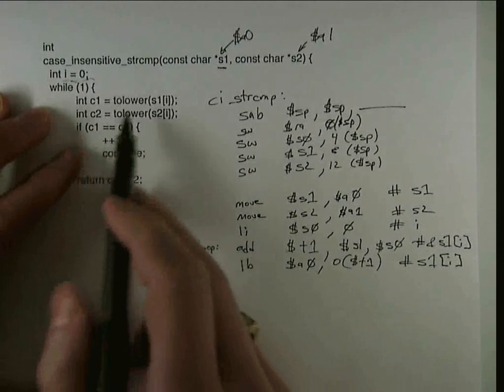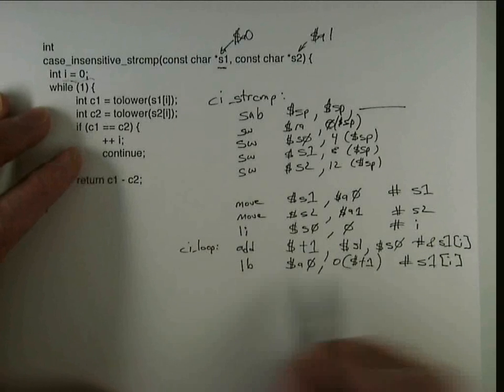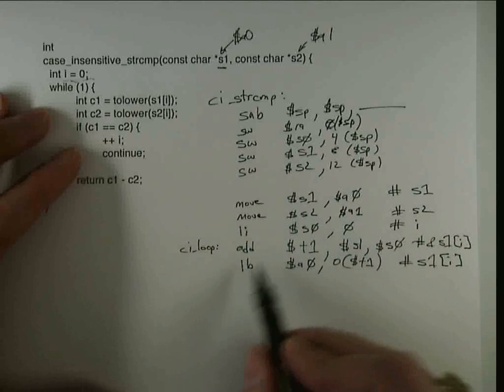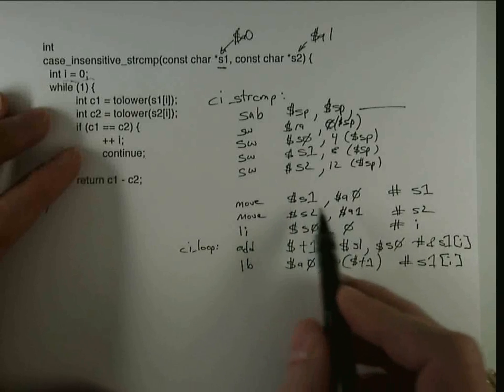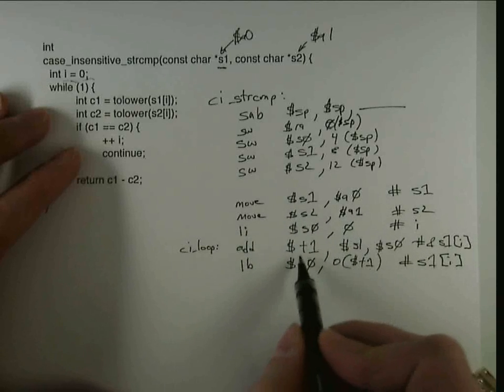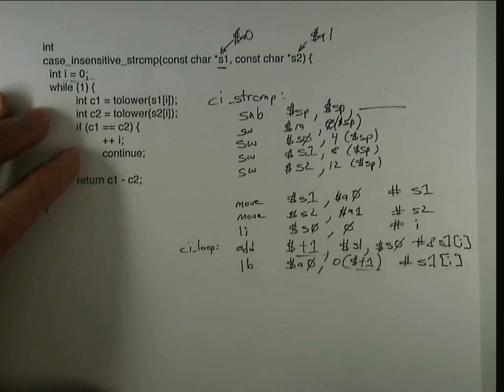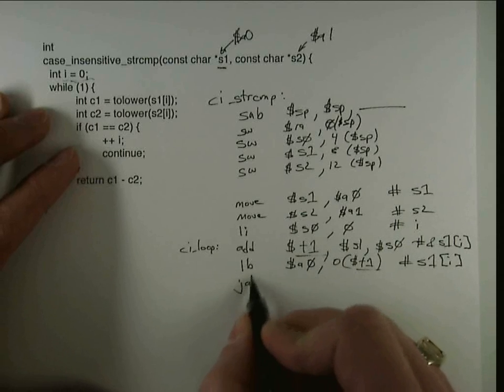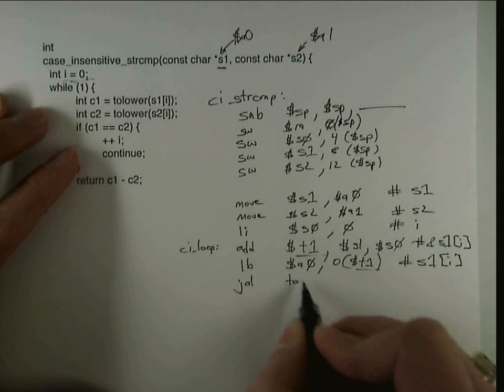Now we're actually ready to do the call. There's no registers that need to be saved before that call because there's nothing in a temporary or a caller saved register that needs to be alive. So the only thing that's in a temporary register is this t1, but we've used it, and we're not going to use it again in the rest of the execution. So it's okay if the called function overwrites it. So I can do the call to tolower.